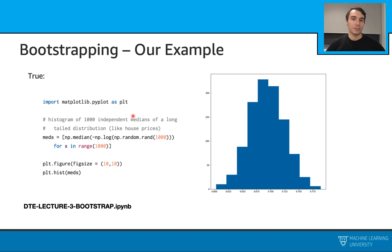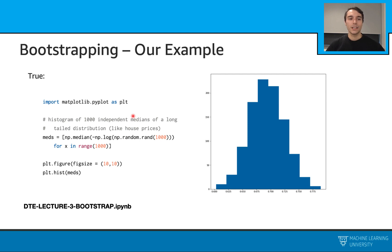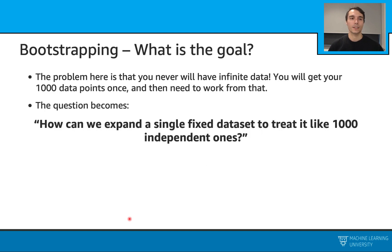Usually we don't have an infinite amount of data, but we have a dataset of maybe a thousand data points, and we have to work with that. Here is an example: assume we have a simulation of house prices, and we have one thousand medians of these house prices. We look at these independent data points in terms of their medians. When we look at the histogram of these medians, we see this type of distribution. There is also a notebook here which you can follow through. The question is: how do we expand this single fixed-size dataset and treat it like one thousand independent datasets?